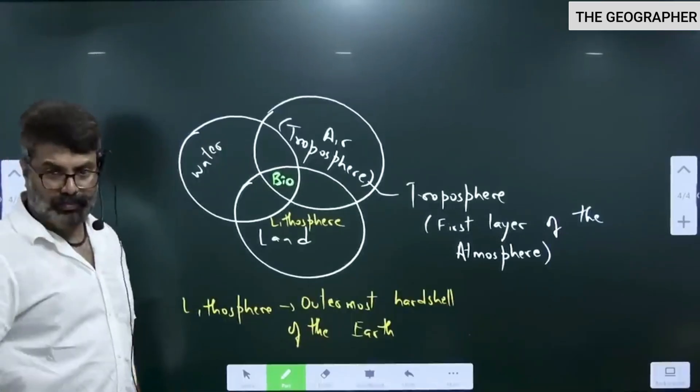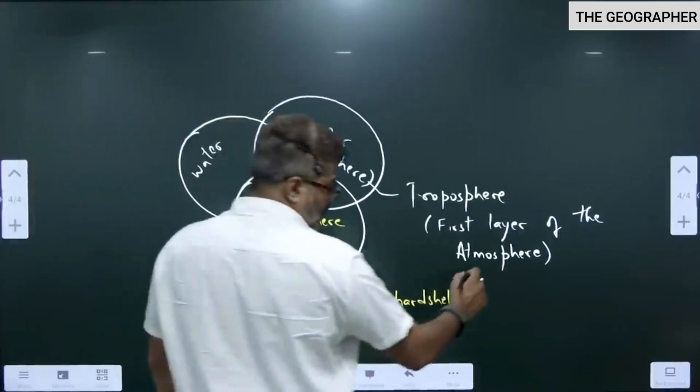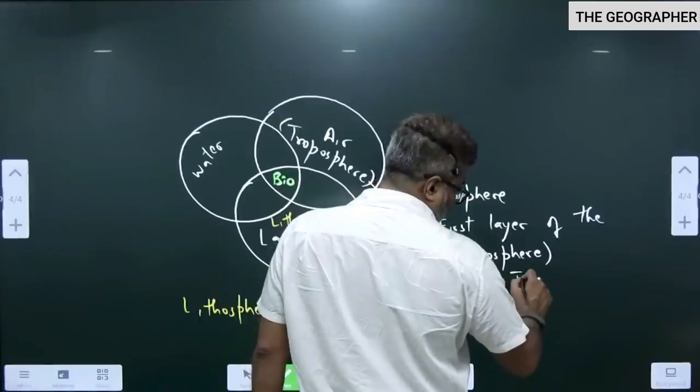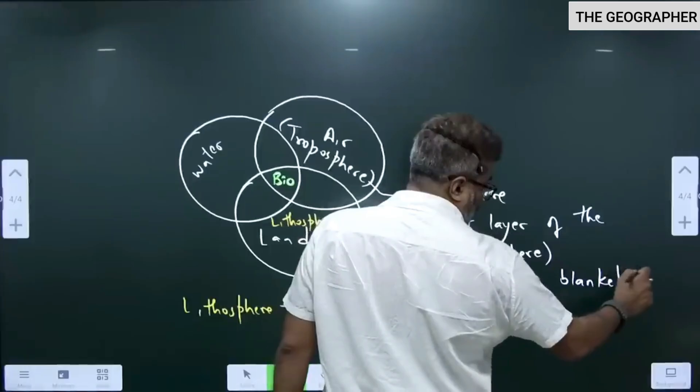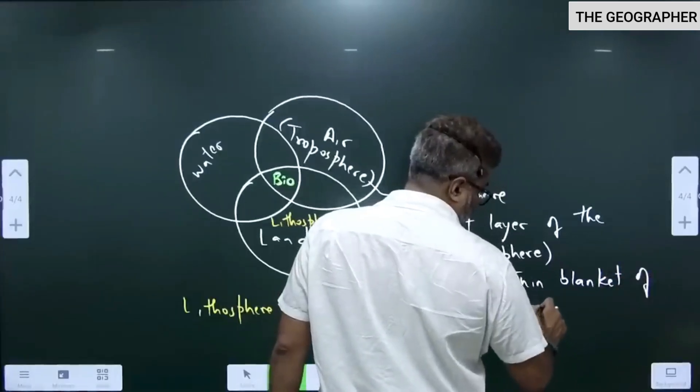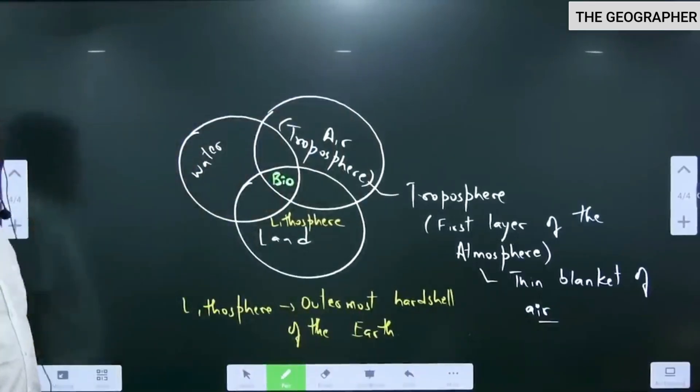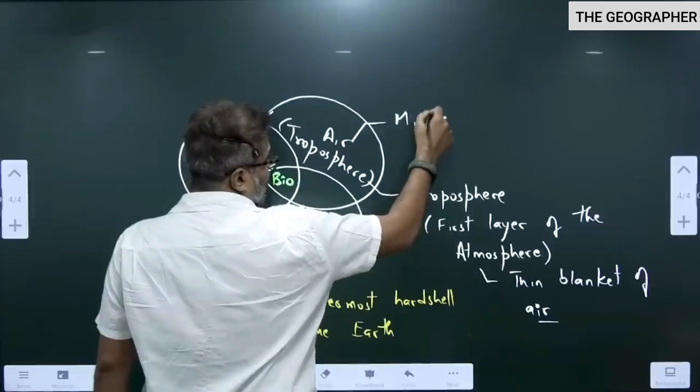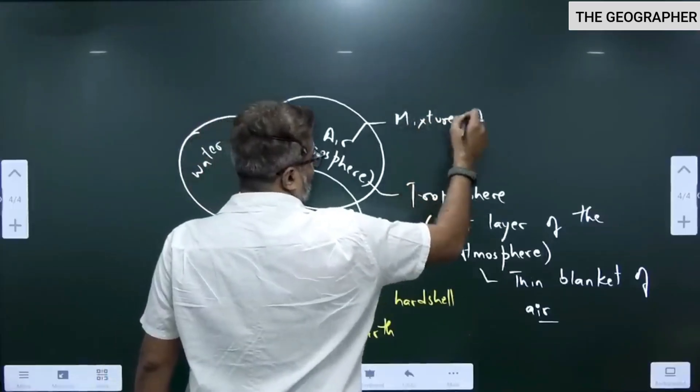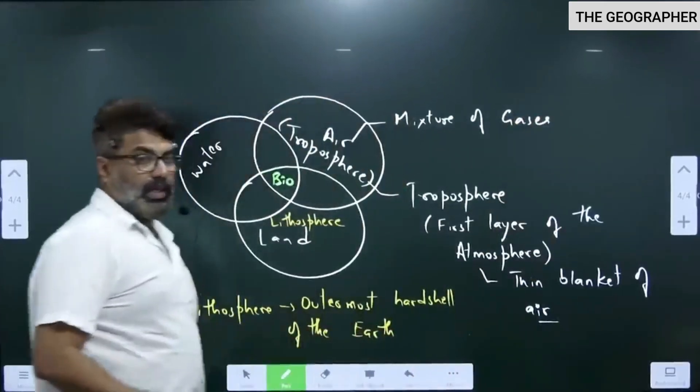So small, small definition you write. Troposphere is the first layer of the atmosphere. Then what is atmosphere? Thin blanket of air is atmosphere. Thin blanket of air is called as atmosphere. So now you might ask sir, what is air? Air is mixture of gases.